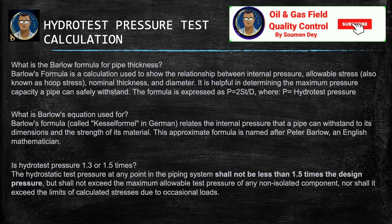What is Barlow's formula for pipeline thickness? This is a very popular term — hydro test pressure is calculated by Barlow's formula. Barlow's formula is a calculation used to show the relationship between internal pressure, allowable stress (also known as hoop stress), nominal thickness, and diameter. If we know these three or four things, we can easily calculate the hydro test pressure for the pipeline or piping system. It is helpful in determining the maximum pressure capacity a pipe can safely withstand.